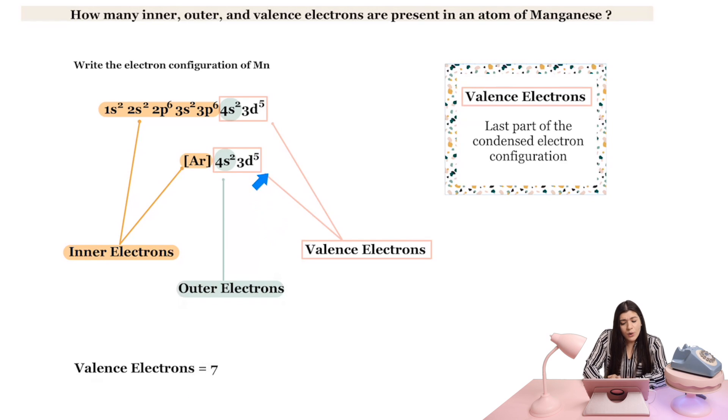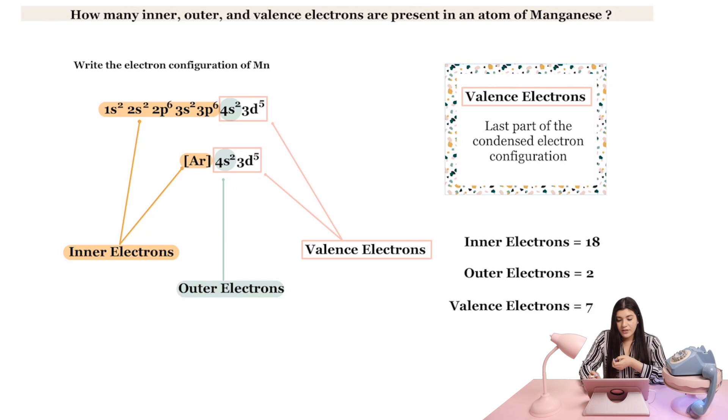And then for valence electrons, what we're going to see, and this is why I wrote the abbreviated method, this is why I wrote that here. For the valence electron, it's going to actually be the last part of the condensed electron configuration or abbreviated electron configuration. So it's just everything in this box. So how much is that? Well, that's going to be, remember, our electrons are the exponents. So that's 2 plus the 5. So that's going to be 7 valence electrons. Just to reiterate, our inner electrons are 18, our outer electrons are 2, and our valence electrons are 7. And as we discussed, this is where every little part of it came from. It all came from just knowing the electron configuration.